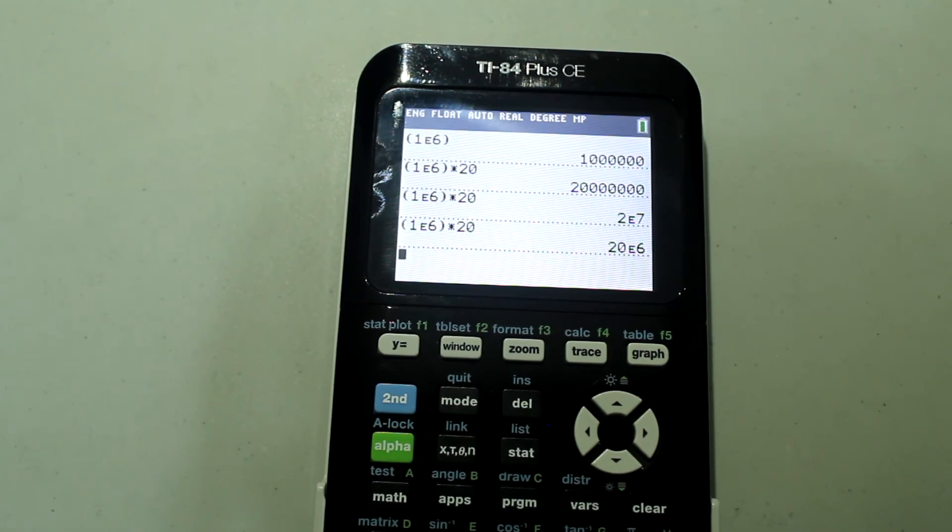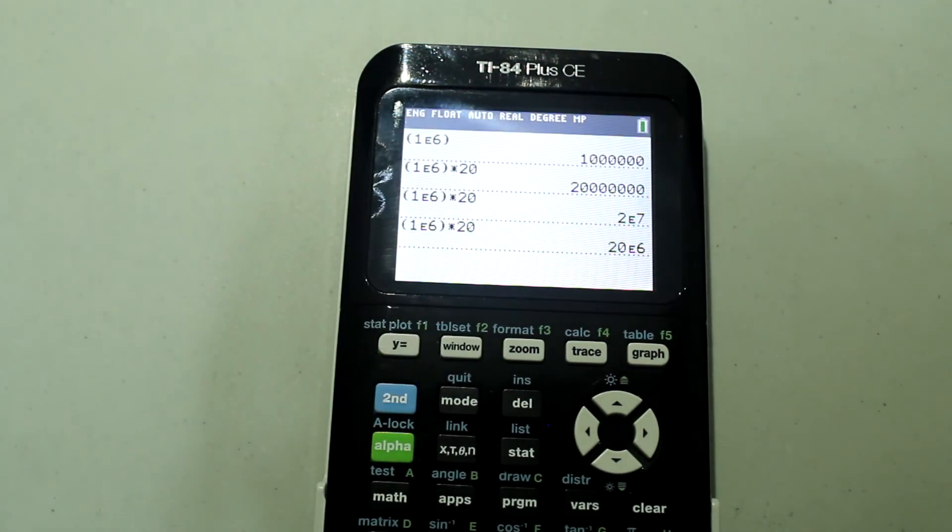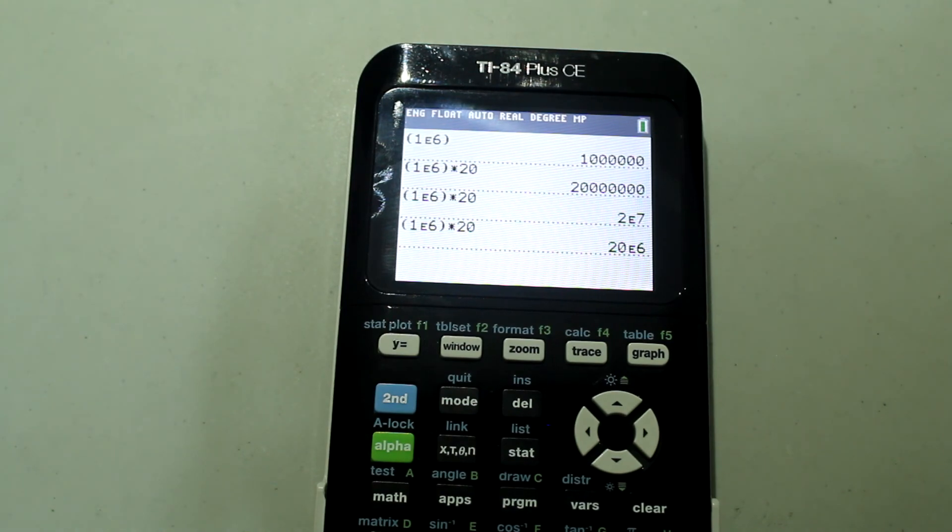So that's convenient if you're working with units. For example, this could be twenty megapascals instead of two times ten to the seven pascals. So it just makes life easier sometimes.